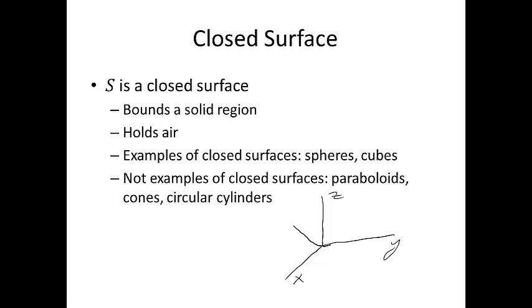If we look at the graph of a circular or elliptic paraboloid — just one running along the z-axis, say z equals x squared plus y squared — notice the top's open, so it's not bounding a solid region. But if your surface was composed of two pieces, one being the circular paraboloid and the other a cap from the plane, that would be a closed surface. A circular paraboloid by itself, or a cone or circular cylinder, are not closed surfaces.